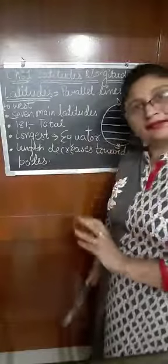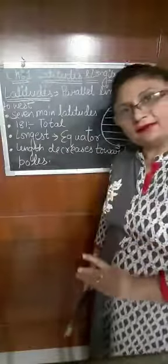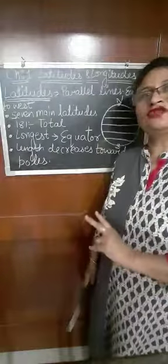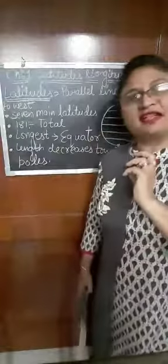There are mainly seven latitudes. The first one is the North Pole, then the Arctic Circle, then the Tropic of Cancer, then comes the Equator, then the Tropic of Capricorn, after that the Antarctic Circle, and then the South Pole. So the main latitudes are 7.